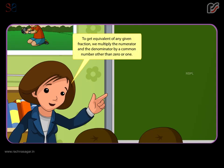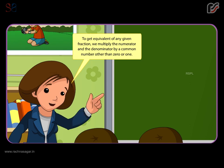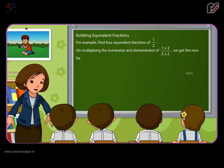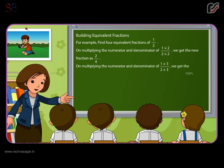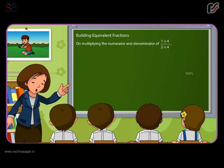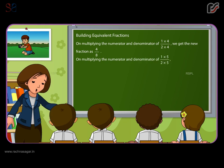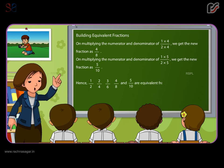Building equivalent fractions. To get an equivalent of any given fraction, we multiply the numerator and the denominator by a common number other than zero or one. For example, find four equivalent fractions of one by two. Multiplying by two gives two by four; multiplying by three gives three by six; multiplying by four gives four by eight; multiplying by five gives five by ten. Hence, one by two, two by four, three by six, four by eight, and five by ten are equivalent fractions.